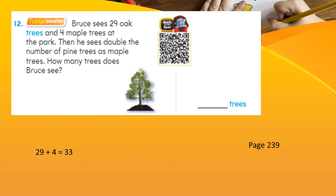Very good. You get a 33. Now, the second part of the question. Then he sees double the number of pine trees as maple trees. So how many maple trees he has seen? He has seen 4. So what is the double of 4? Very good. It's 8. So keeping 33 the way it is, you are going to add another 8. And then you will get 41 as an answer. Very good. So how many trees does Bruce see in all? He sees 41 trees. Excellent.